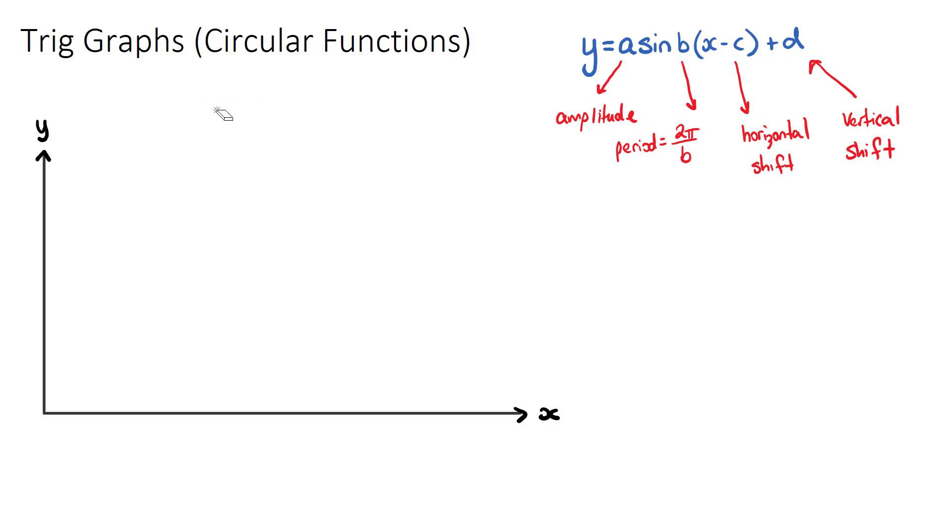So the example that we're going to sketch will be y equals 3 sine 2, then x minus pi on 4, plus 4. Okay, firstly, what we need to look at is what our a value is, our amplitude, and our a for our function will be 3.